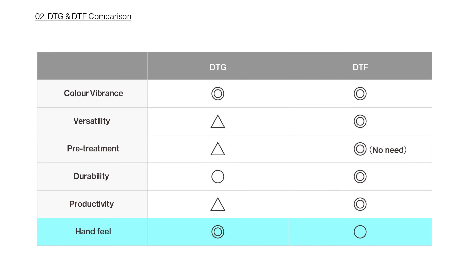In terms of hand feel, DTG is heralded for its soft feel — water-based inks absorbed directly into the fabric make the print virtually indistinguishable by touch from the rest of the garment, resulting in comfortable wear especially for apparel worn close to the skin. DTF, while smooth and flexible, does add a slight layer to the fabric — it has a slight rubbery texture depending on the design.